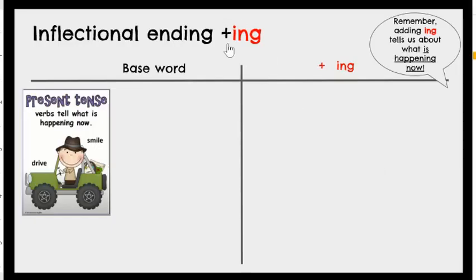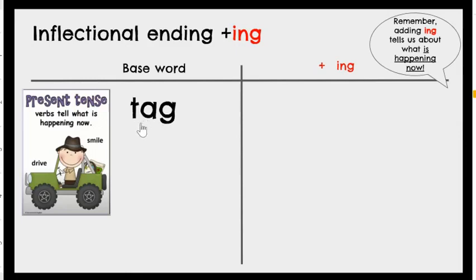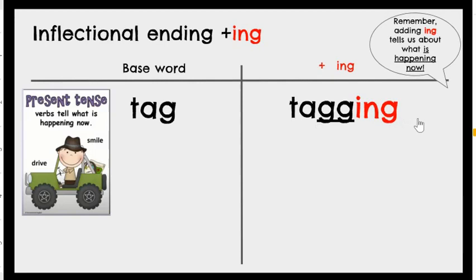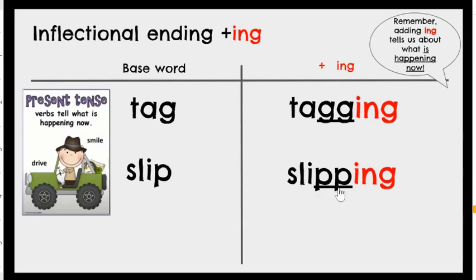Now let's work on the inflectional ending -ing. Adding -ing tells us about what is happening now — the present tense. Let's work with the same three words. Tag has a short vowel followed by one consonant, so we need to keep the short vowel by doubling the G: tag becomes tagging. She is tagging me while we play freeze tag. Next, slip: we double the P and add -ing to get slipping. My hands are slipping from the monkey bars.